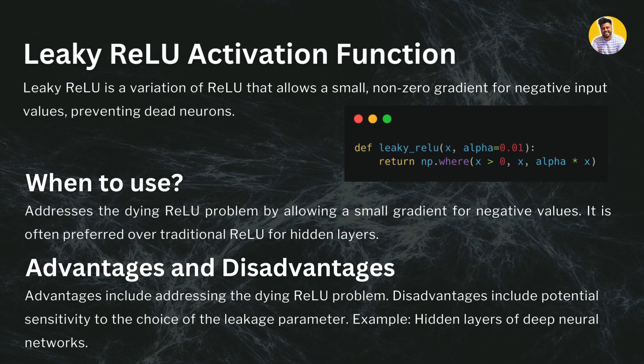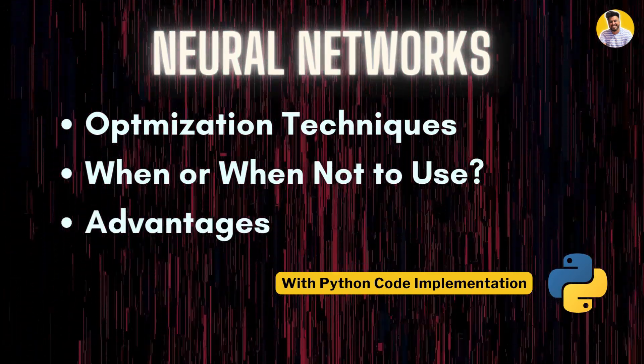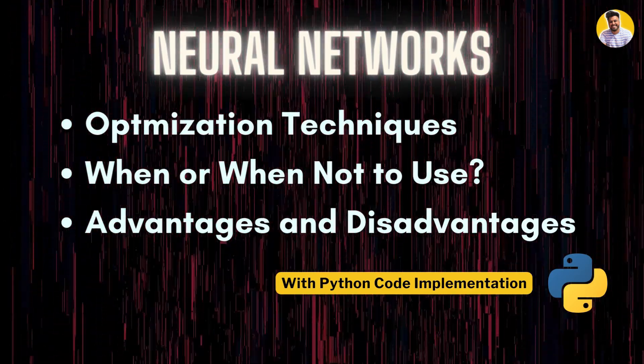The advantage of Leaky ReLU is that it addresses the dying ReLU problem. Its disadvantage is potential sensitivity to the choice of the leakage parameter, as it can cause parameter leakage between layers. To solve this, we have Parametric ReLU and other activation function variants, which we'll discuss in further videos. In our next video, we'll cover neural network optimization techniques — when to use them, and their advantages and disadvantages.